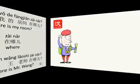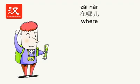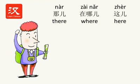When you get lost or want to know the location of a certain place, you may ask for directions. In Chinese you can say 在哪儿? It means 'where.' And there is another word: 哪儿 means 'there.' 这儿 means 'here.'